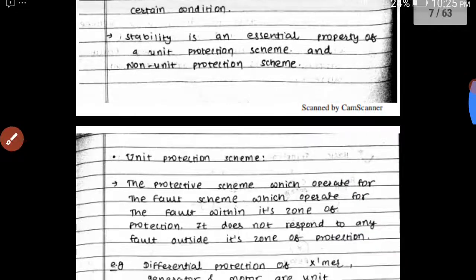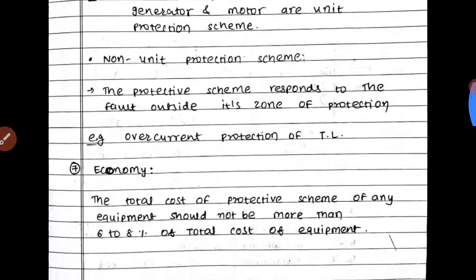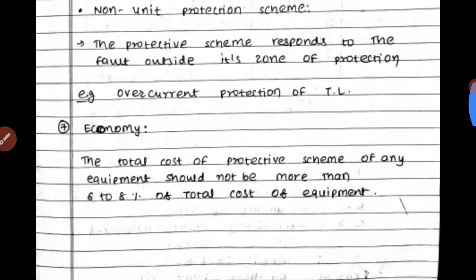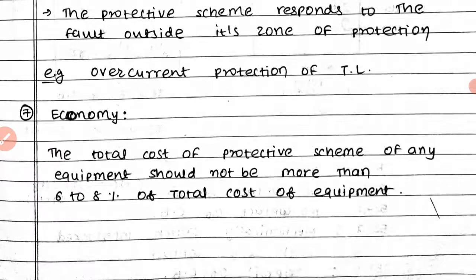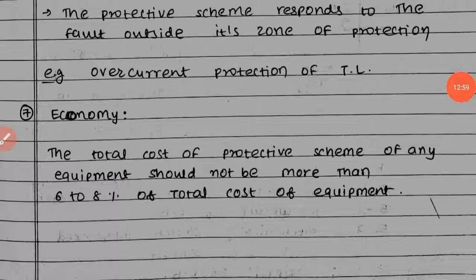The last requirement is economy. The total cost of the protective scheme for any equipment should not be more than six to eight percent of the total cost of that equipment. The providing cost should be as low as possible while efficiency is as high as possible.